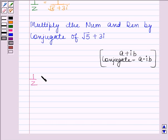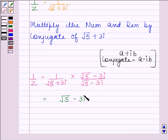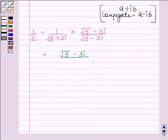1 by z is equal to 1 upon root 5 plus 3 iota into root 5 minus 3 iota. This is equal to root 5 minus 3 iota in the numerator. In denominator, we have root 5 plus 3 iota into root 5 minus 3 iota.